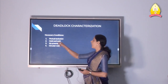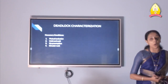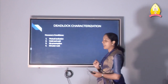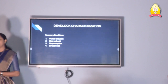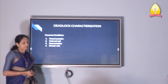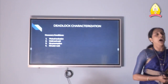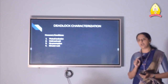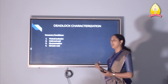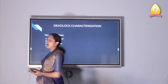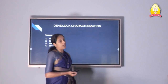The next condition is hold and wait. Hold and wait means a process must hold at least one resource and be waiting to acquire additional resources that are held by other waiting processes. For example, process P1 can hold resources R1 and R2, and at the same time it can request resource R3, which is held by process P2. Here, processes hold some resources while waiting to acquire additional resources held by other waiting processes.